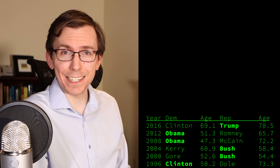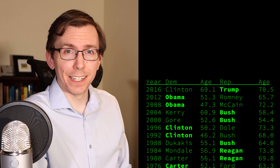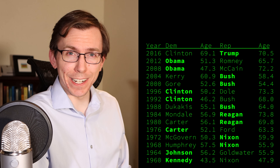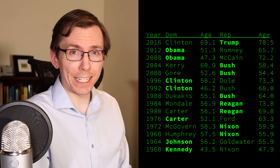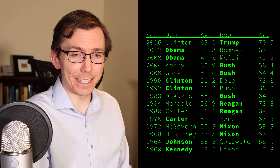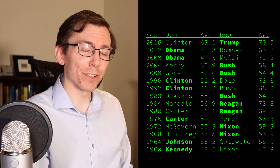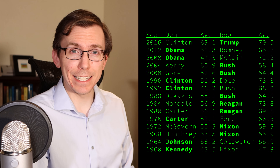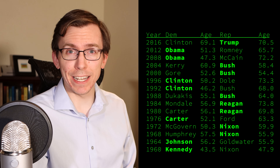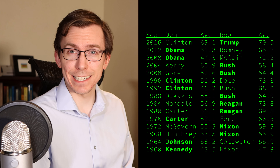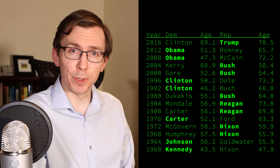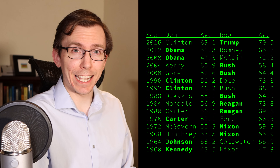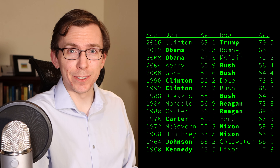To test Pete Buttigieg's claim that only a young Democrat can take the White House successfully, we'll look at the last 15 presidential elections going all the way back to John F. Kennedy. For each presidential election, we have the age of both the Democrat and the Republican candidates at the time of the election, as well as the outcome. One extra variable we'll consider is whether or not one of the candidates is actually an incumbent, and if that incumbency will have any effect on the candidate's success. The outcome variable is Boolean — 0 if the Democratic candidate lost, and 1 if the candidate won.